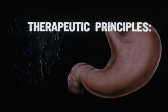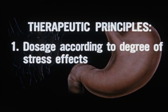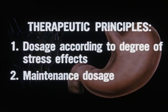Thus, the therapeutic principles involved in medication with anticholinergic drugs such as probanthine are, first, dosage to fit the degree of stress effects operative in the individual patient, and second, maintenance dosage if the original stress has not been eliminated or resolved.